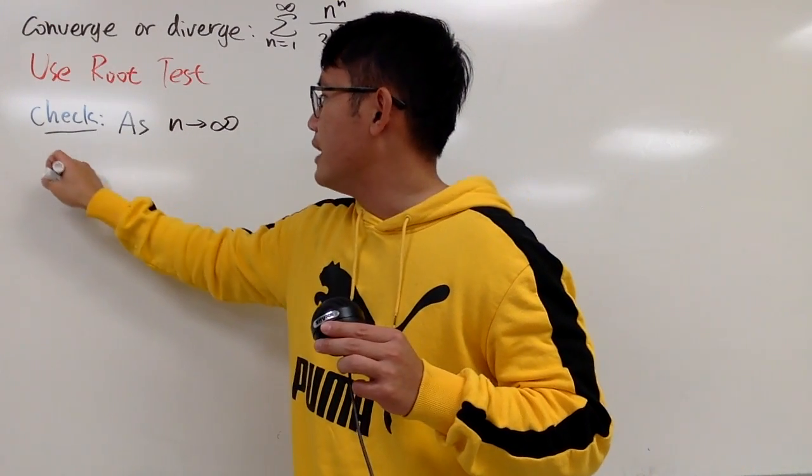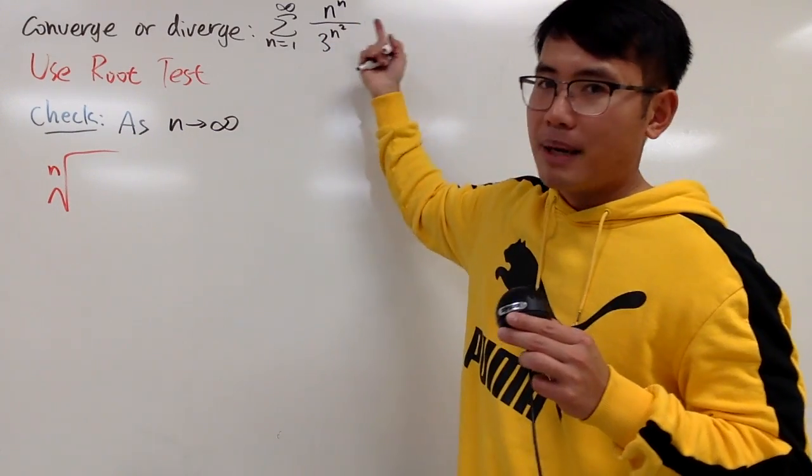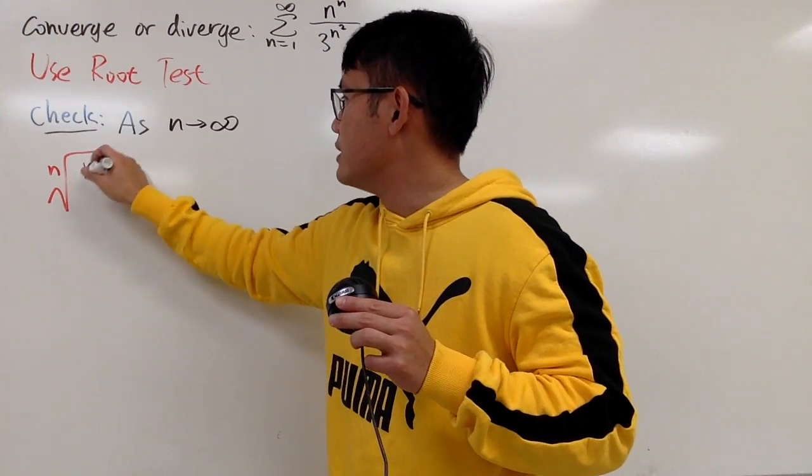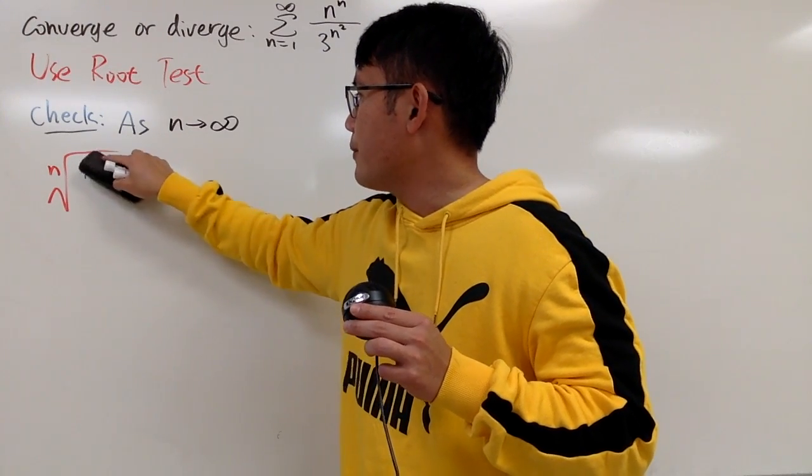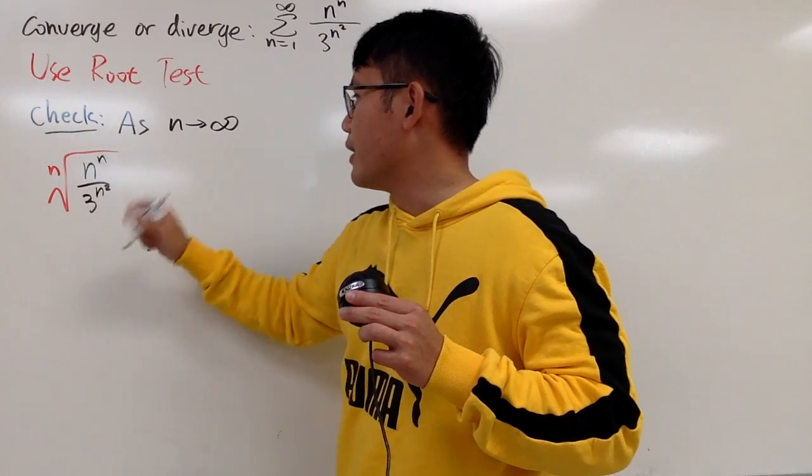Anyway, we will take the nth root of this expression. And because everything is positive, you don't need to put the absolute value. It doesn't really matter. So you can just write down n^n over 3^(n^2), like that.